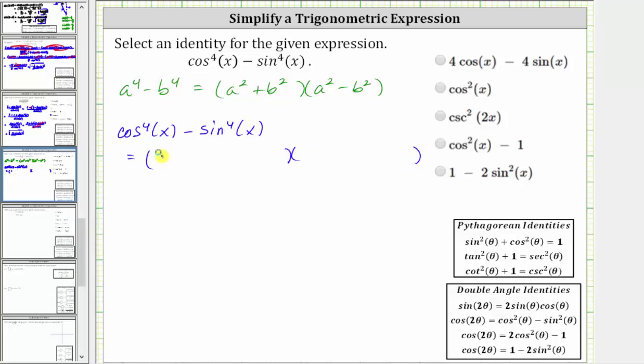One factor is cos^2(x) + sin^2(x), and the second factor is cos^2(x) - sin^2(x).